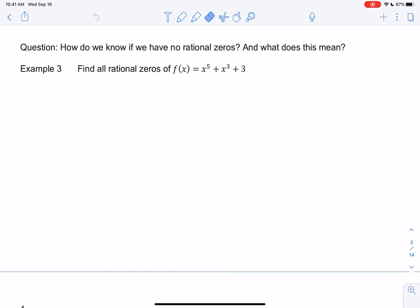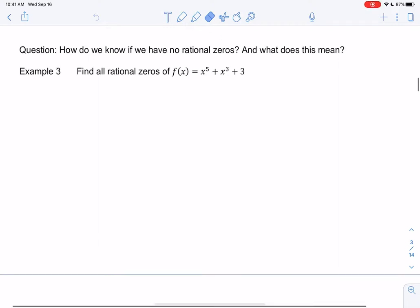Okay, let's do example 3 and 4 for section 3.4, and we were finding those rational zeros. So how can I be confident that a function has no rational zeros? So let's look at an example of that.